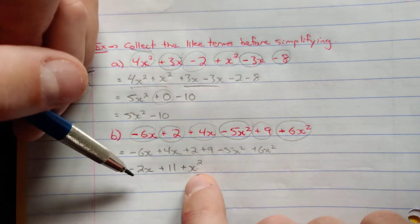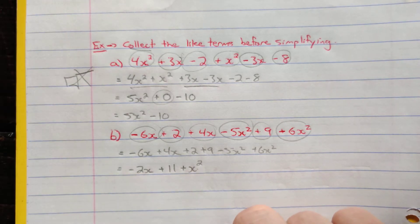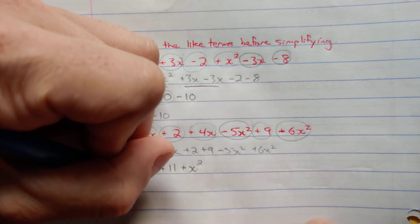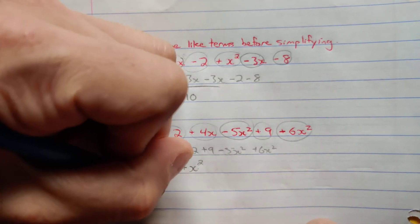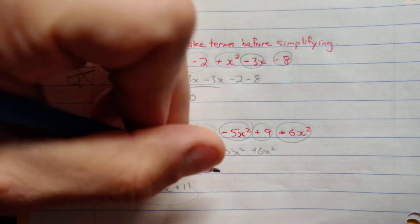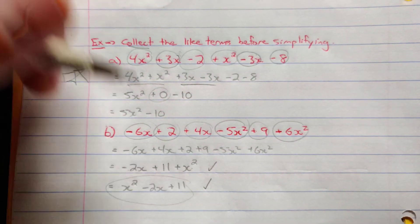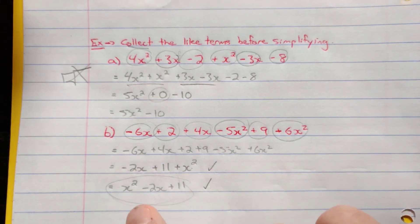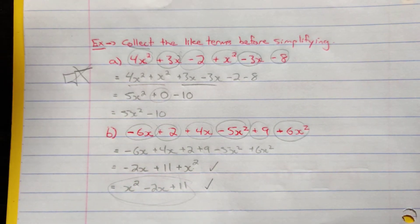We can't combine anything else — a line, a number, and a square don't combine. In general, you'll see answers written in descending order of powers: x squared minus 2x plus 11. Does the order matter? No. But writing in descending order makes it easier to see this is a trinomial with the highest power being 2.